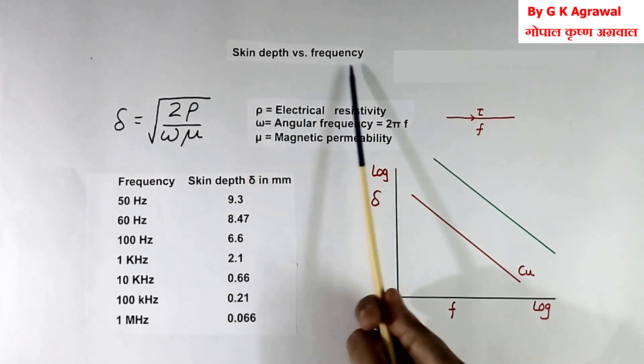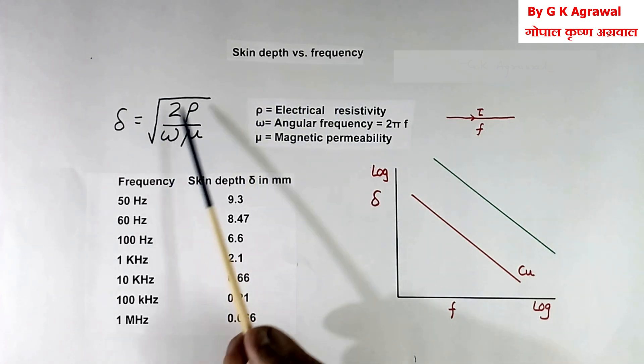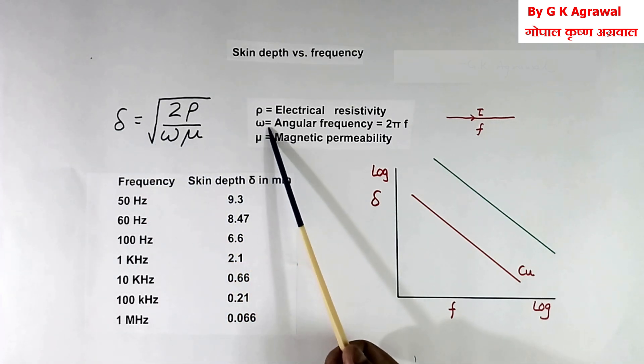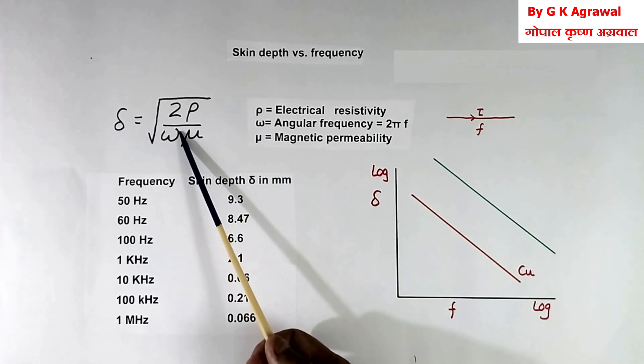Now this is skin depth with frequency. This is formula for skin depth. This depends upon frequency also. Higher the frequency, lower the value of delta will be.